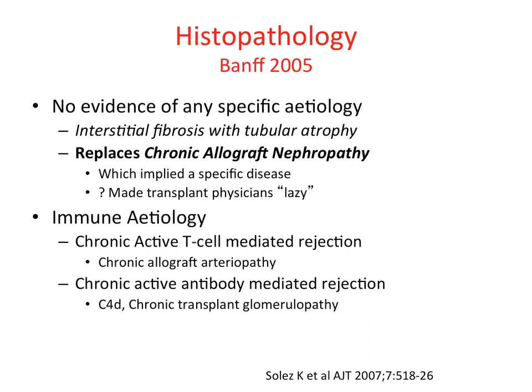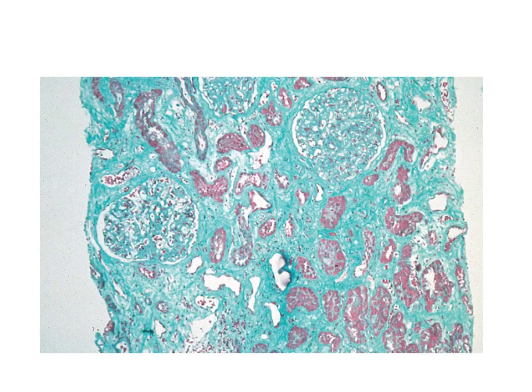The histopathological classification is more complex. In the Banff 2005 classification, an important change was made: the term chronic allograft nephropathy was dropped and replaced with interstitial fibrosis with tubular atrophy. This is simply a description of scarring and doesn't imply any specific cause. One reason chronic allograft nephropathy fell from favour is that it implied a specific disease and made transplant physicians lazy — patients were labelled without effort to establish the cause. Banff 2005 also acknowledged that for many patients there is an immune etiology, driven by T cells or antibody.